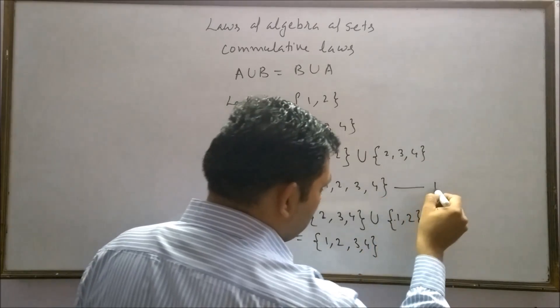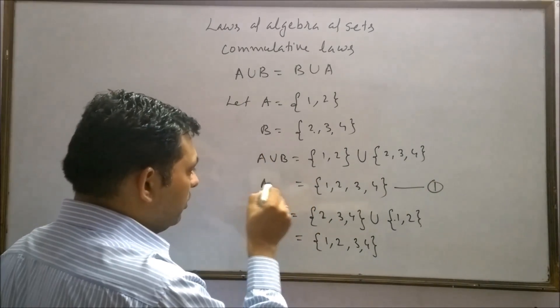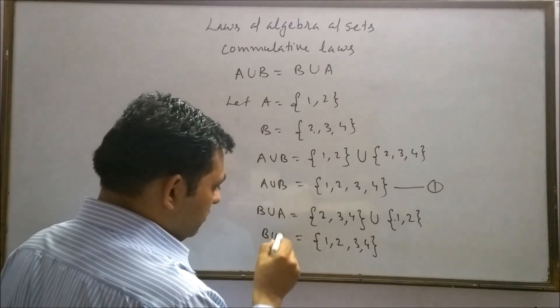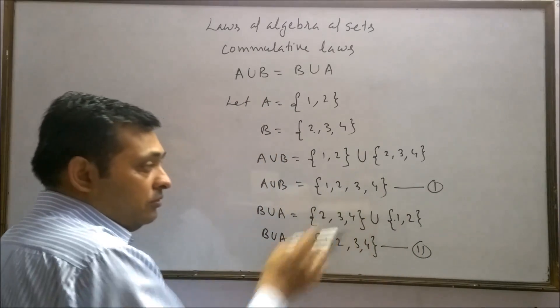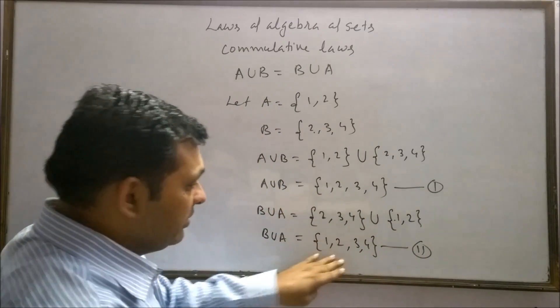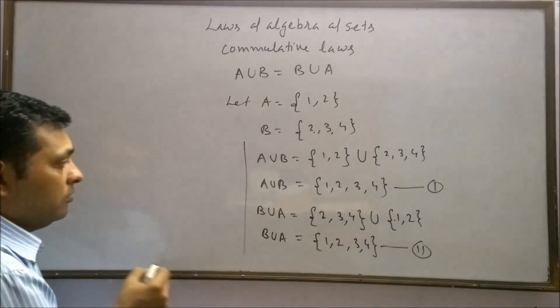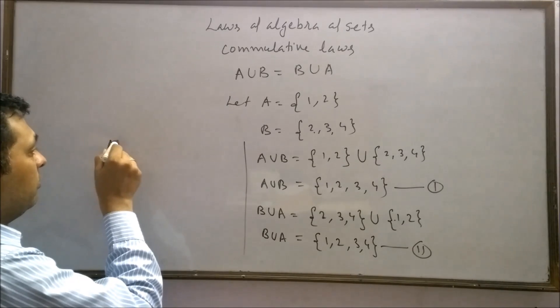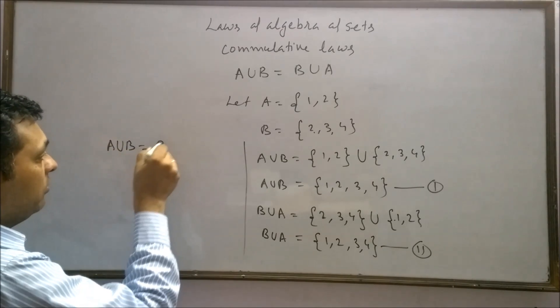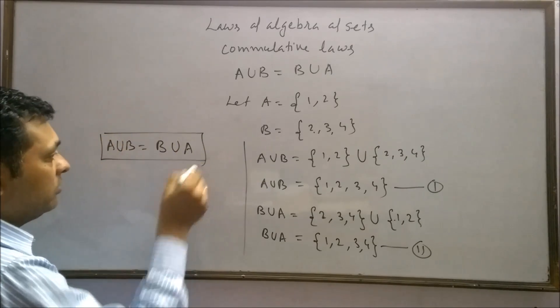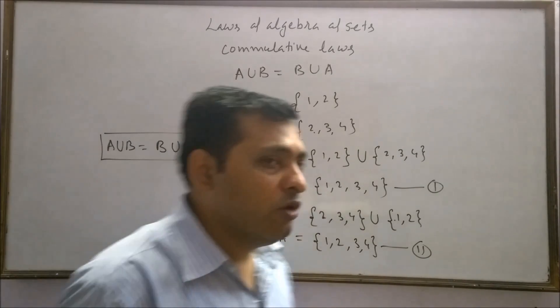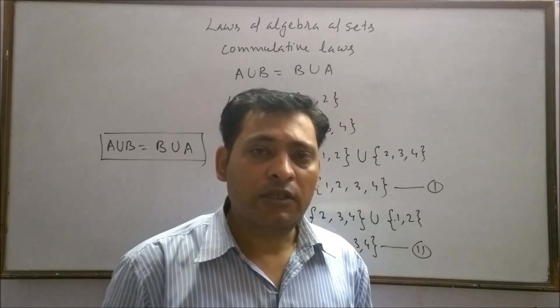This is result number 1 for A union B. This is result number 2. From 1 and 2, we conclude that A union B equals B union A. It means sets follow the commutative law under union.